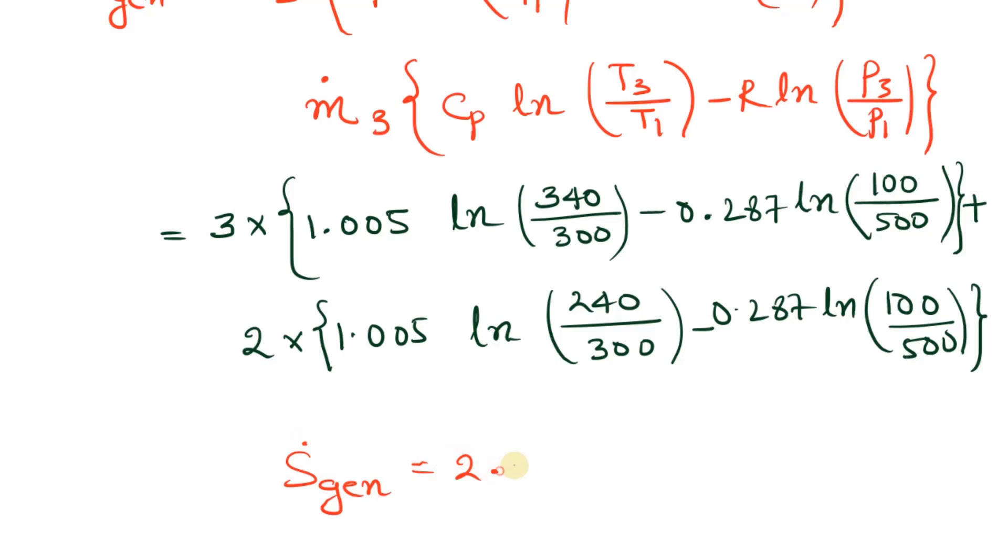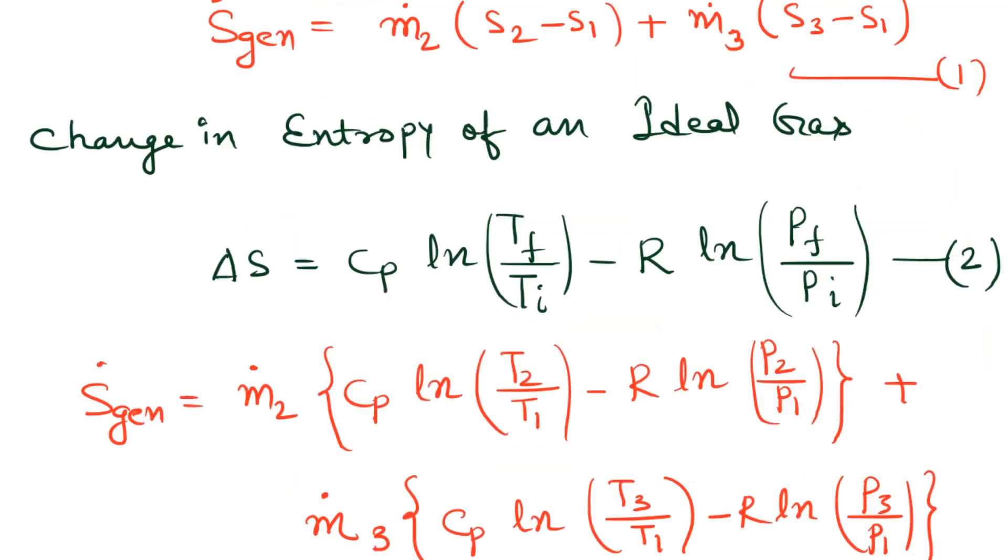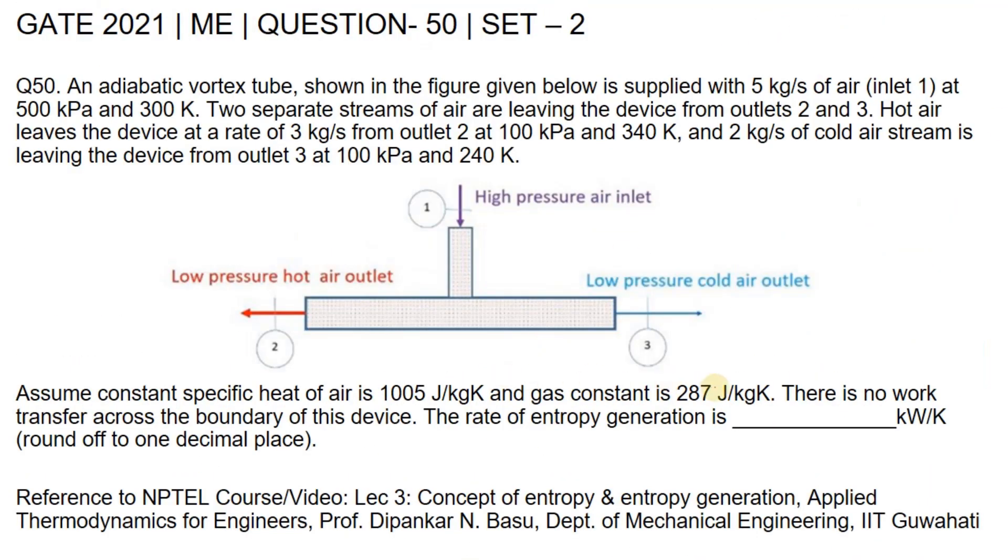If we calculate this value, we will get the generated entropy as 2.24 kilowatt per kelvin. The rate of entropy generated in kilowatt per kelvin is 2.24, rounded off to one decimal place, so the answer is 2.2 kW/K.